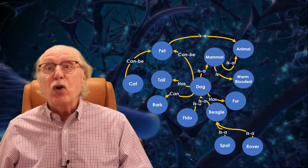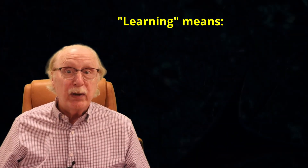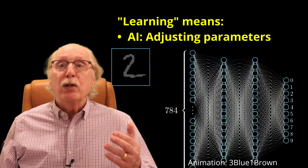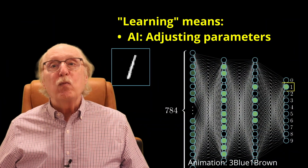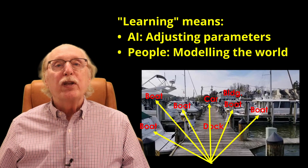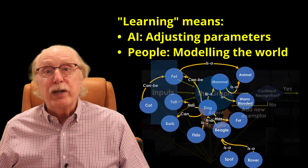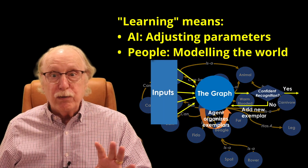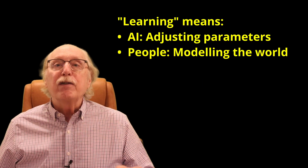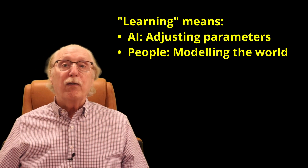In this video, I'll answer that question by looking at how it relates to machine learning. The key is that the word 'learning' means very different things depending on whether we're talking about AI or people. For artificial intelligence, learning usually means adjusting weights inside a neural network model for a better fit to a dataset. For humans, learning means building a flexible internal model of the world — a graph of interconnected concepts, rules, facts, and experiences. These are not the same thing, and the differences explain why today's AI is powerful but still far from human intelligence.